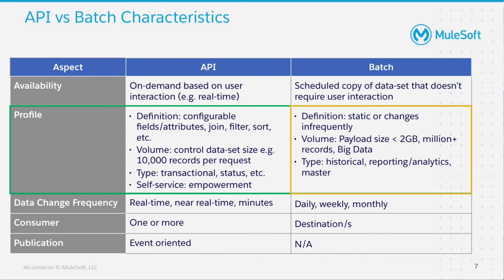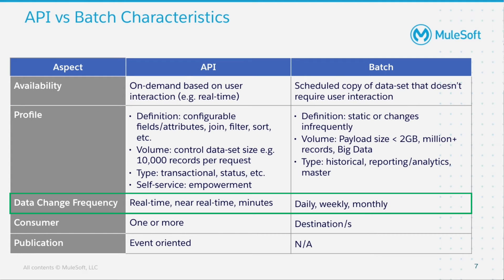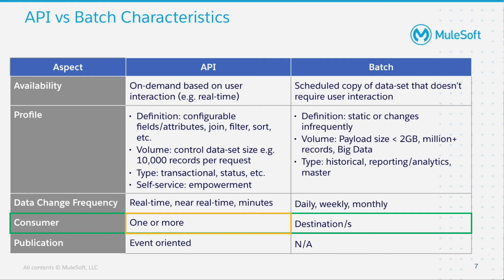Batches are by definition mostly static and change very infrequently. The volume is much larger — millions of records and gigabytes of data. The data change frequency is also important to note. APIs are used when data can change in real or near real-time, within minutes, while batch is designed to cater for data changes that are much slower — for example, daily, weekly, or monthly. Consumers of an API can be multiple and undefined at design time, whereas batch is usually tied to a particular destination or set of destinations, and this will rarely change.